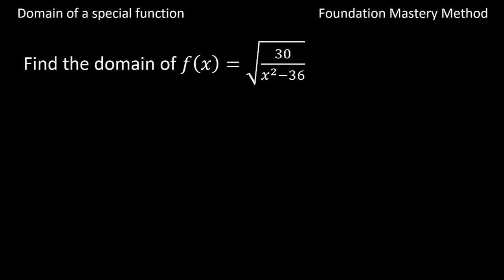Now in this section we'll find the domain of two special functions. The first one is f(x) equals square root of 30 over x squared minus 36.